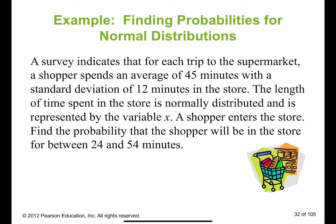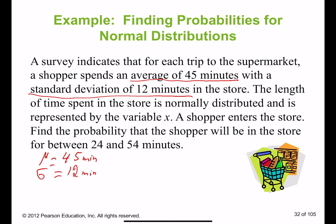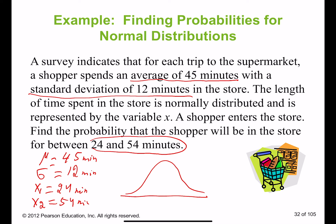A survey indicates that each trip to the supermarket a shopper spends an average of 45 minutes with a standard deviation of 12 minutes. The length of time is normally distributed, represented by variable x. Find the probability that the shopper will be in the store between 24 and 54 minutes — so x₁ = 24 and x₂ = 54. Since the average is 45, x = 24 falls to the left and x = 54 falls slightly to the right of the mean.